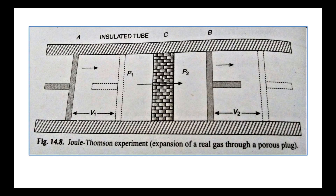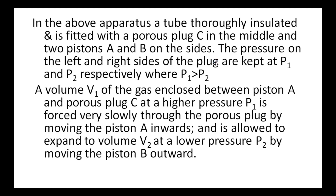Porous means which consists of holes, so gas can pass through it easily. There are two thermometers kept near piston A and also near piston B to read the temperature of the gas. In the above apparatus, a tube thoroughly insulated and fitted with a porous plug C in the middle, and two pistons A and B on the sides. The pressure on the left-hand and right-hand side of the plug are kept P1 and P2 respectively, where P1 is greater than P2. A volume V1 of the gas enclosed between piston A and porous plug C at higher pressure P1, which is forced slowly, very slowly through the porous plug by moving piston A inwards.